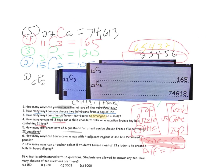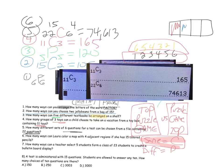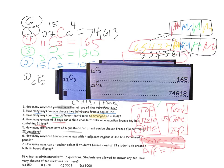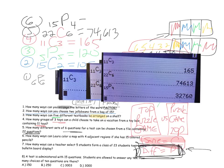Problem six: how many ways can Laura color a map with four adjacent regions if she has 15 colored pencils? We have 15 and 4. If I use red, blue, green, and yellow on four regions, and then use the same four colors in the order yellow, blue, green, and red, those are two very different looking maps. Switching the order makes them different, so this is a permutation: 15P4, or 32,760.